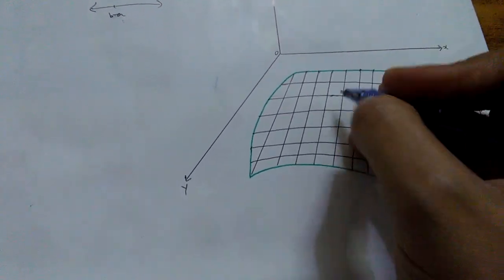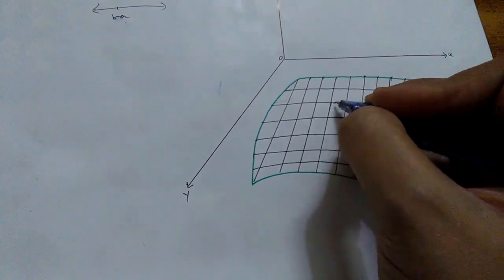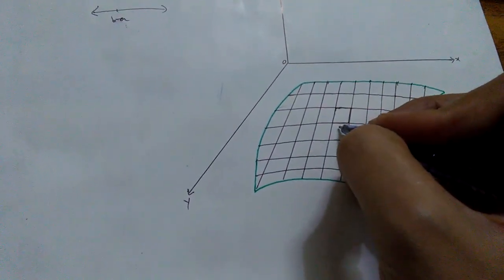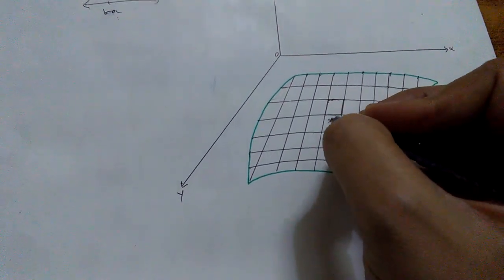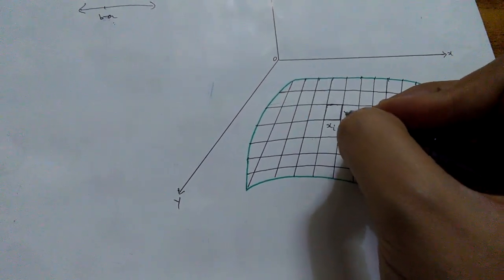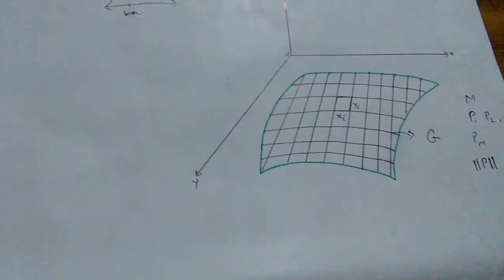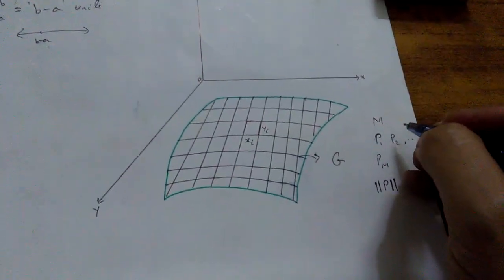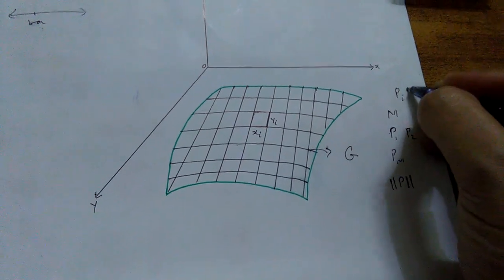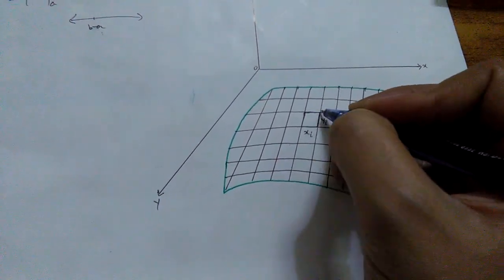If I just pick up this cell or this partition right here, it has breadth x-sub-i and length y-sub-i. This is the p-sub-i-th partition.